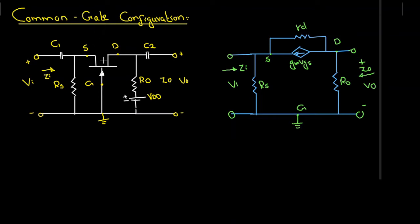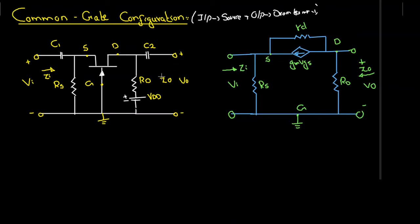You can see the common gate configuration on your screen. In this configuration, the input is applied to the source terminal and the output is taken from the drain terminal.